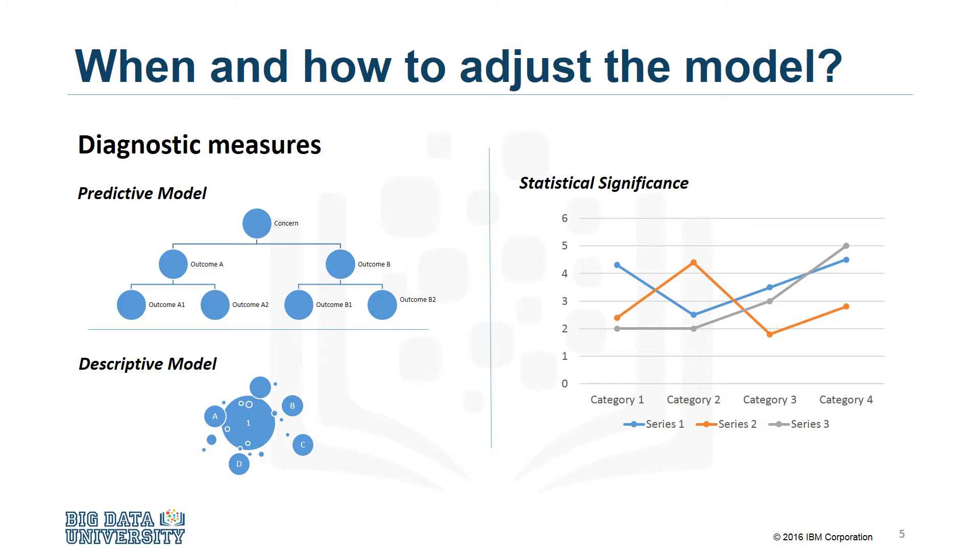The second phase of evaluation that may be used is statistical significance testing. This type of evaluation can be applied to the model to ensure that the data is being properly handled and interpreted within the model. This is designed to avoid unnecessary second guessing when the answer is revealed.